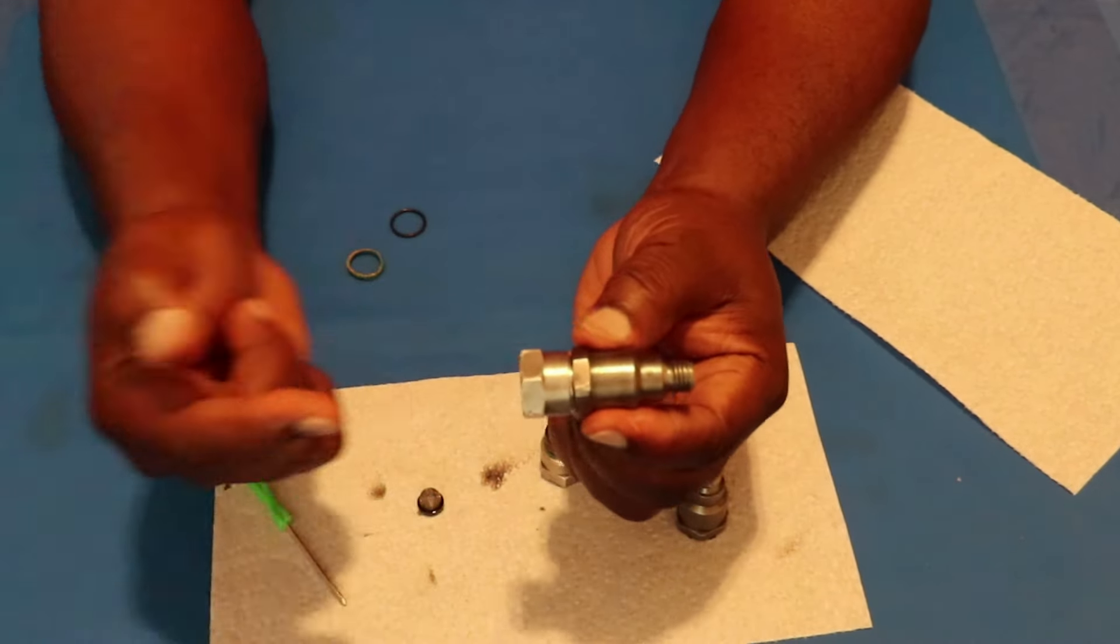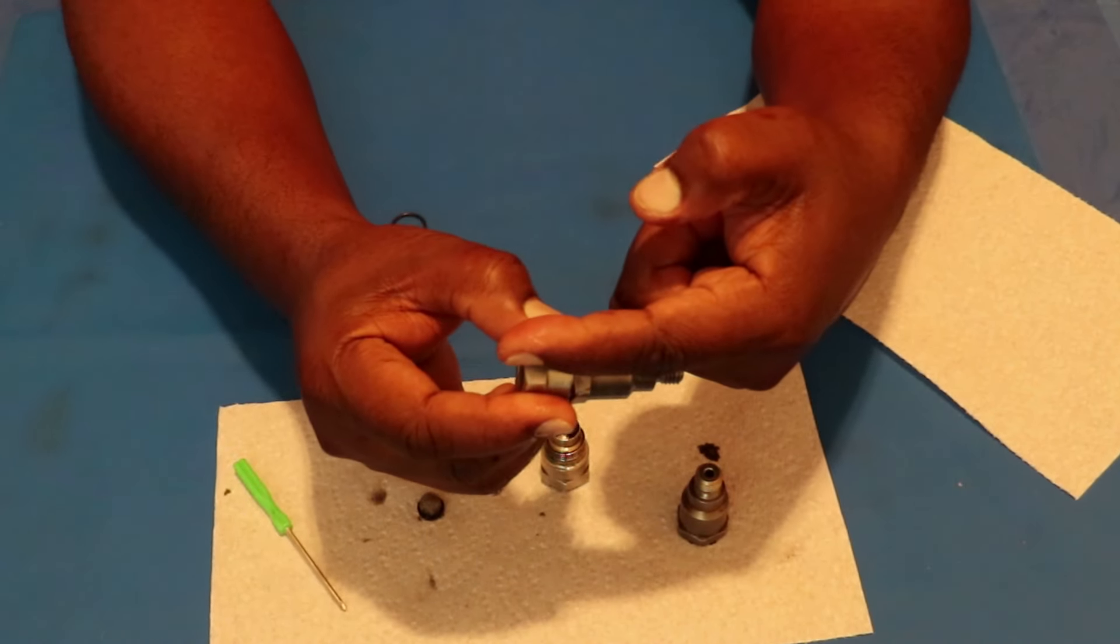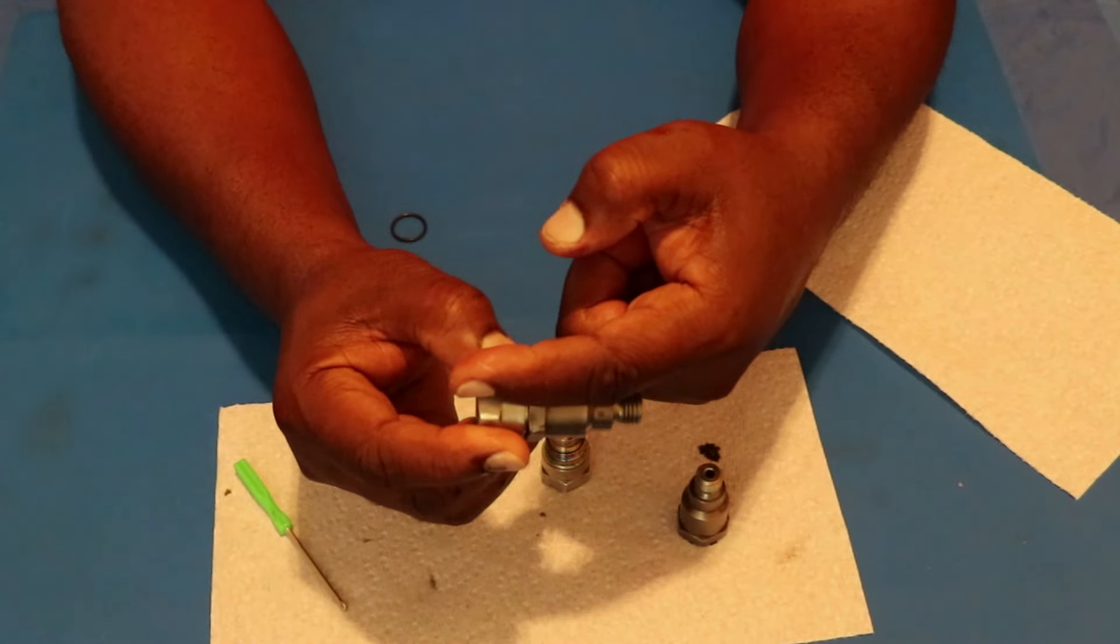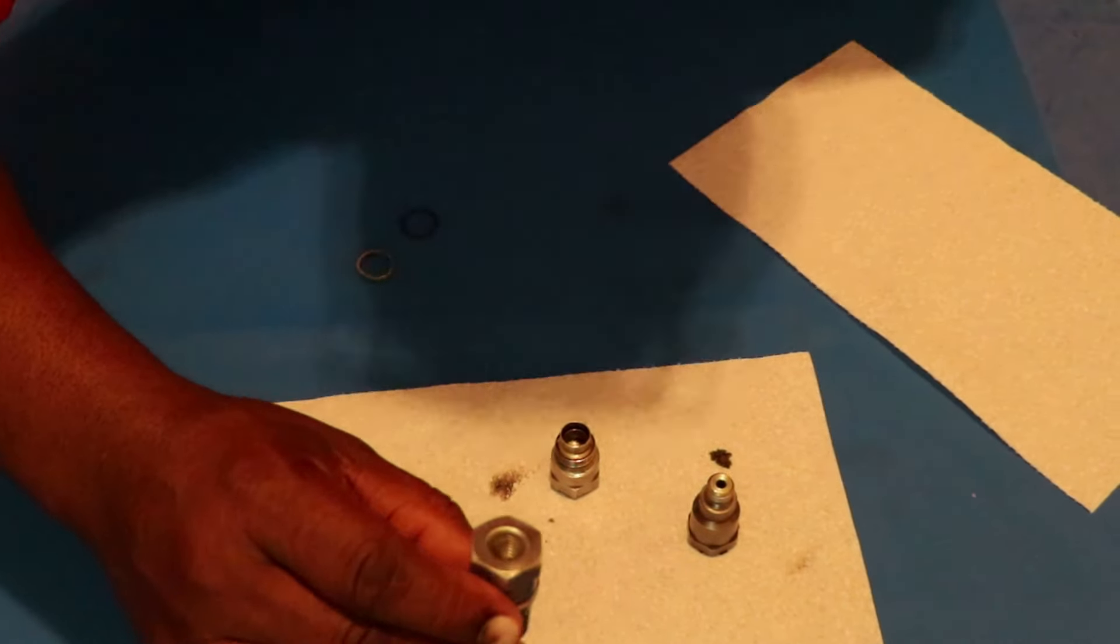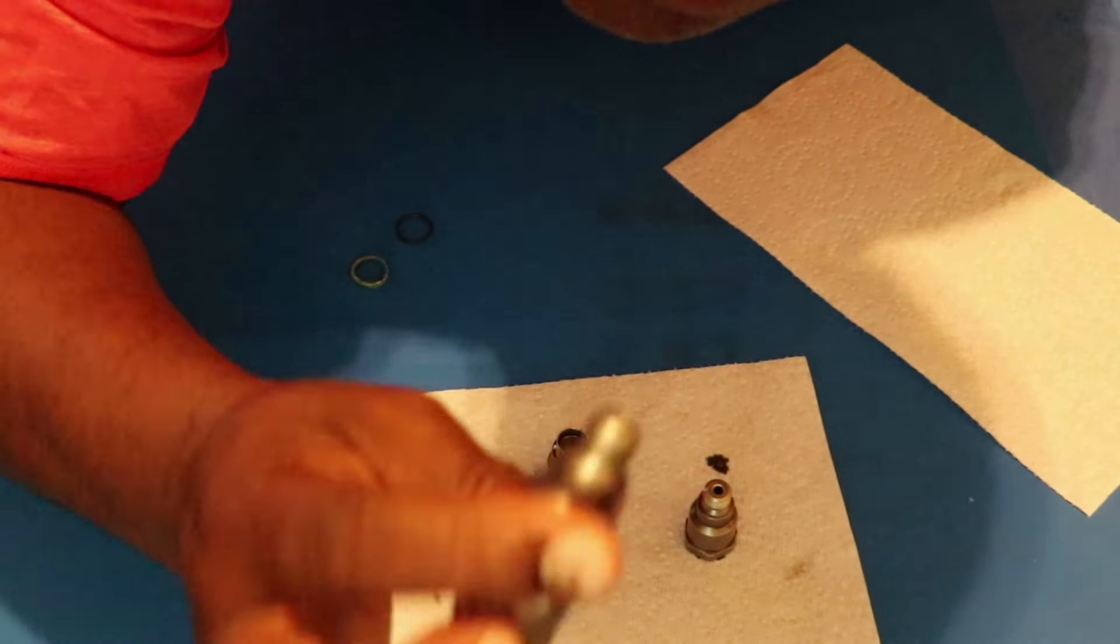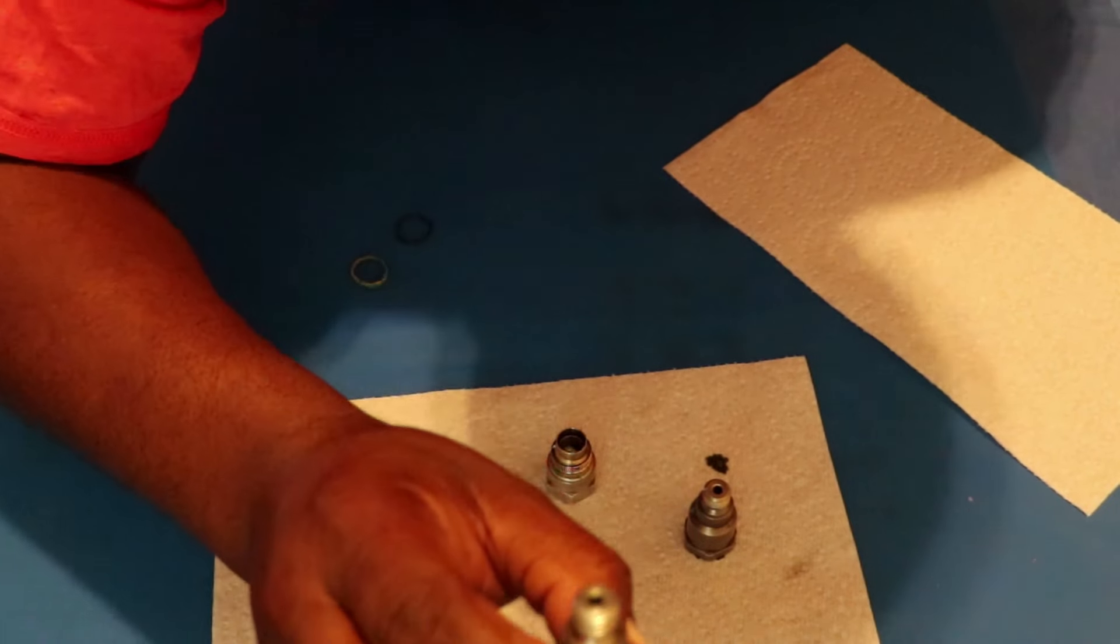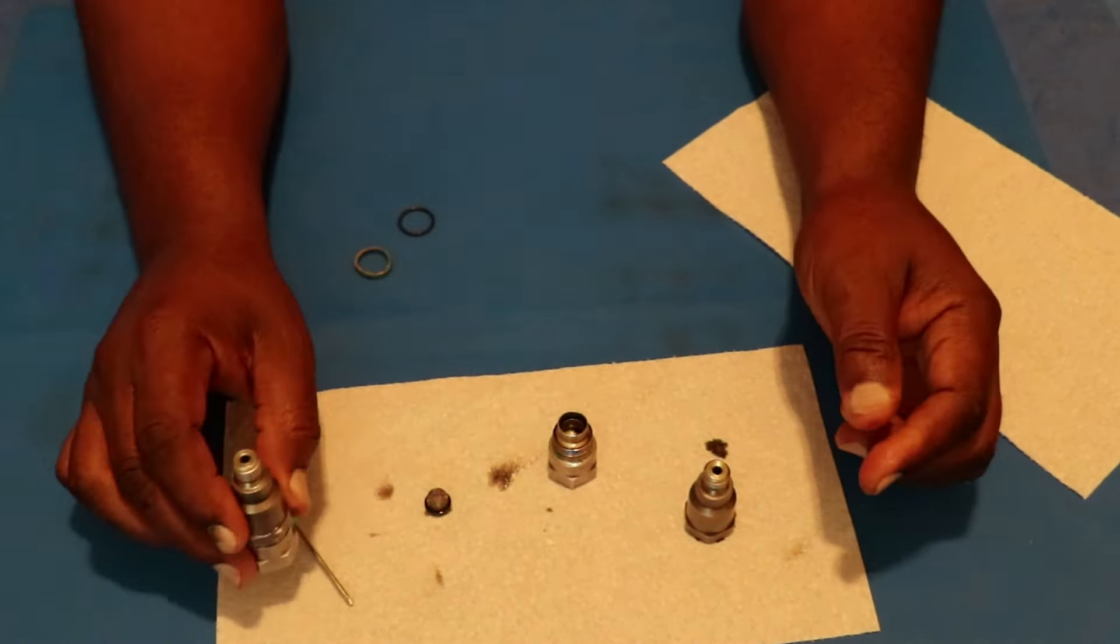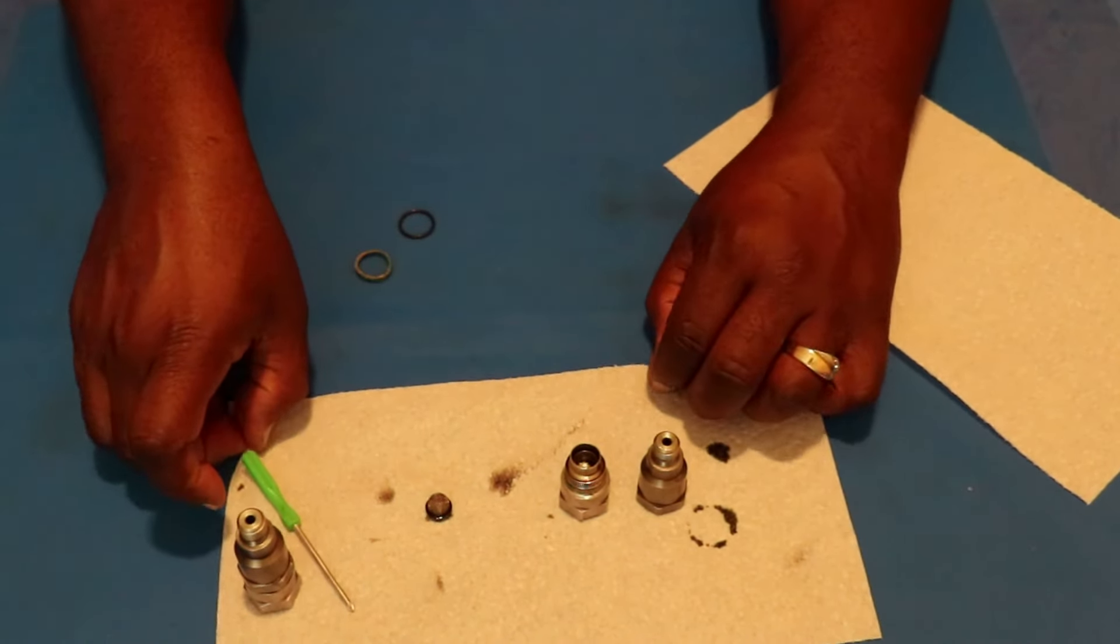So back to the valve, the check valve flows oil this way and it shall not be flowing anything this way. Use a compressible fluid to check it, what's that? Air. Just put your mouth on here and blow through it. Blow through that way, turn around, once it's clean, and then you should get nothing going the other way, and I don't, so this one is good to go.